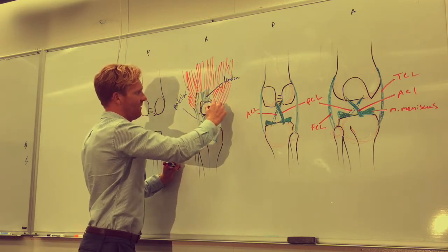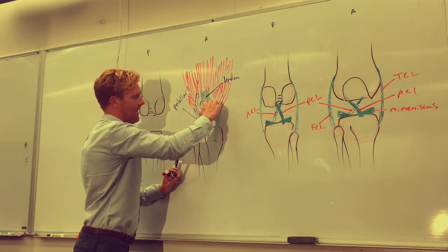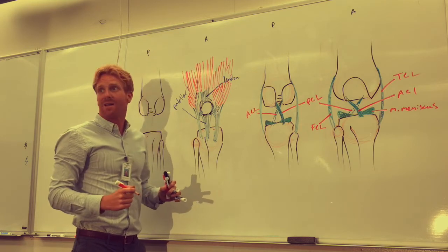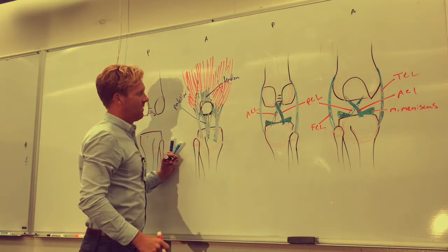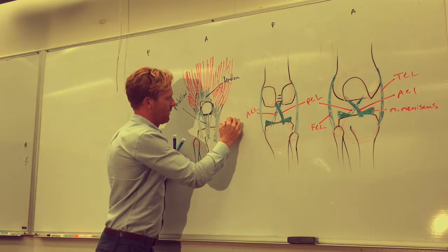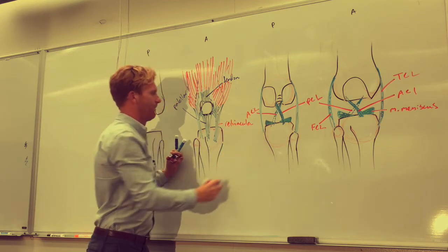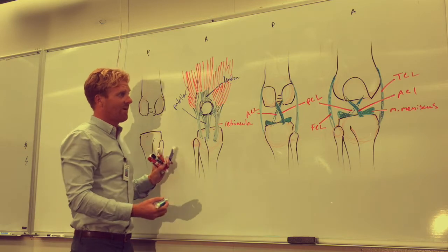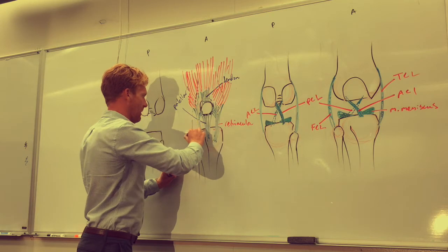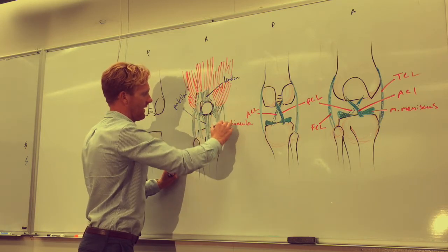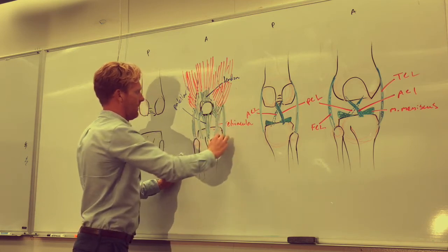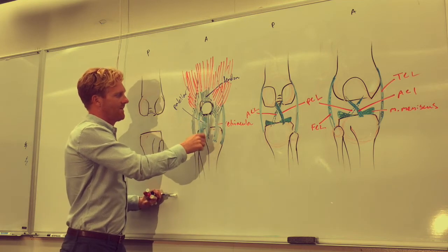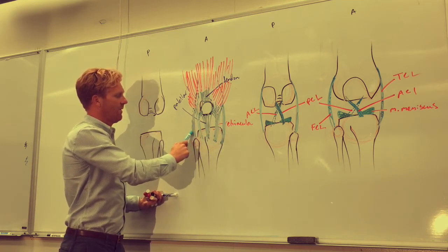Parts of the vastus tendons also attach to the lateral sides of the patella. Together, these chunks of tendon form the retinacula — the medial and lateral patellar retinacula. From this anterior view, we still have the fibular and tibial collateral ligaments just as before. Together, these structures form the superficial structure of the anterior knee.